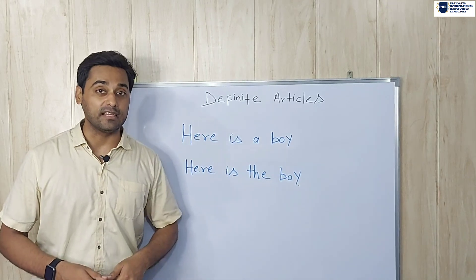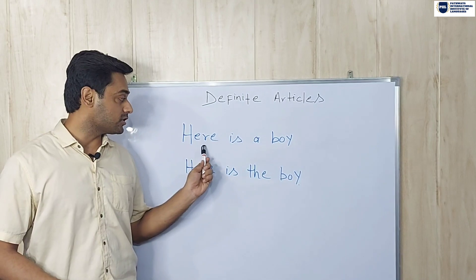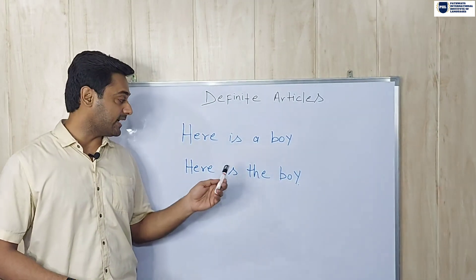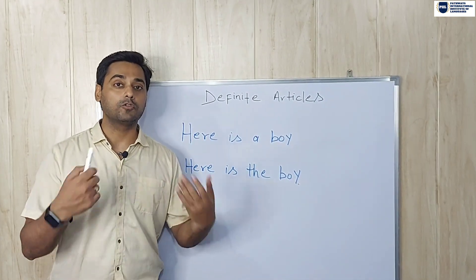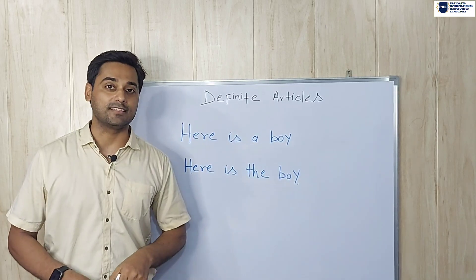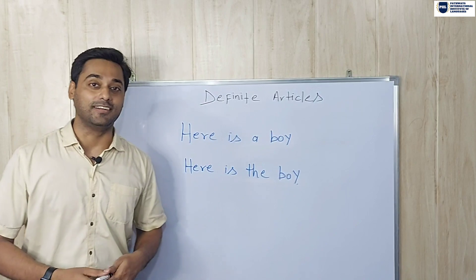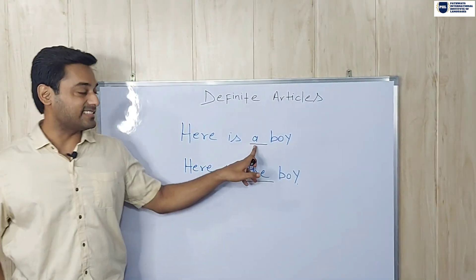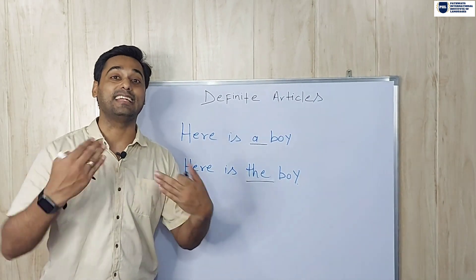Now look at both these sentences which the mother has used. On the first day, the mother used this sentence: 'Here is a boy.' On the second day, the mother used this sentence: 'Here is the boy.' So what is the difference here in both these sentences? The difference is in the article. 'A' is an indefinite article, and 'the' is a definite article.